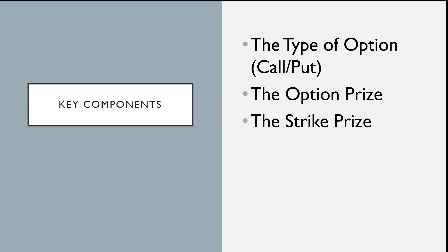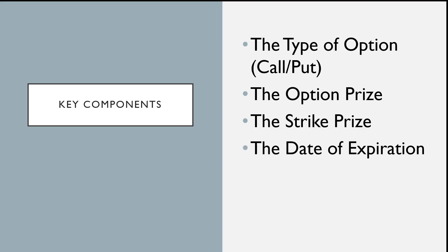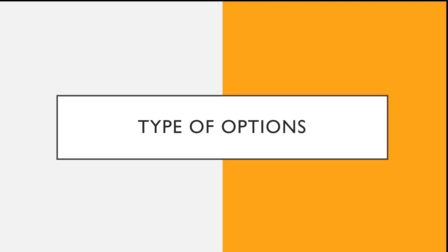The strike price is the agreed-upon price at which you want to exercise or execute the buy or sell of the asset. The date of expiration is how long the option will be valid — the lifetime of that option. It can be one week, one month, one year, or a couple of months. All of these components are elements of an option that you can decide upon.